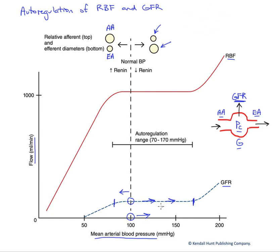The last thing to note is that this line, even though it appears almost flat and well auto-regulated, does have a slightly positive slope — as pressure goes up, GFR does rise a little. This is actually advantageous, as we would have a need for enhanced excretion of volume in response to rising blood pressure, helping to bring that pressure back down.